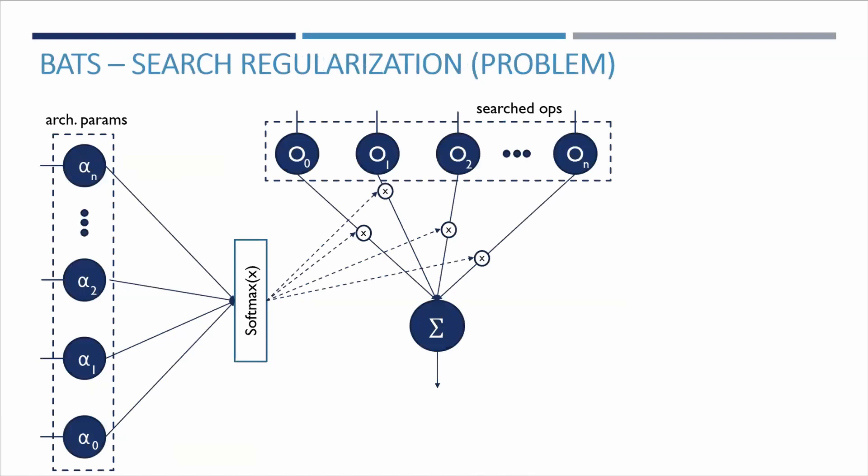Despite its success and appealing formulation, DARTS accuracy can vary widely between runs and often collapse to a degenerate solution that contains mostly skip connections. While there are various heuristics proposed to alleviate this for real-valued networks, we find that most are suboptimal for binary ones. The main issue when searching for binary networks has its roots in the search methodology itself.